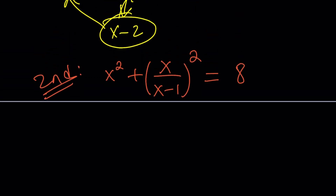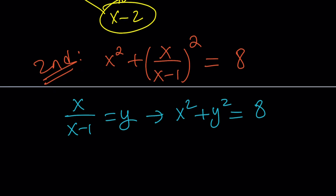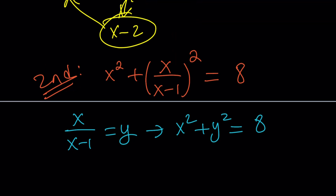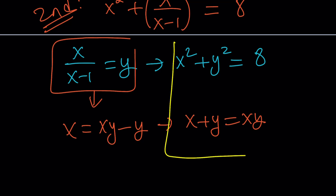Substitution is awesome because it really simplifies things. Let's go ahead and call the expression x over x minus 1 as y. This gives us an equation in two variables, but we can solve it because we get another equation from our assumption. Cross multiplying x over x minus 1 equals y gives x equals xy minus y. Adding y gives us x plus y equals xy. Now these two together give us a beautiful quadratic system, very easy to solve.